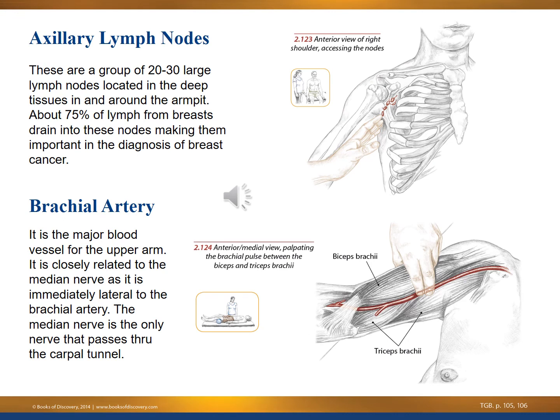Rounding out our view of the shoulder and upper arm are the axillary lymph nodes and the brachial artery. The axillary lymph nodes are about 20 to 30 large lymph nodes located in the deep tissues in and around the armpit. About 75 percent of the lymph from the breasts drains into these nodes, making them very important in the diagnosis of breast cancer. The brachial artery is the major blood vessel for the upper arm; the median nerve is immediately lateral to it and is the only nerve that passes through the carpal tunnel.